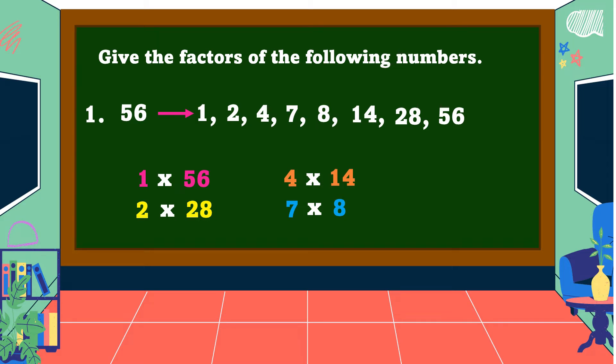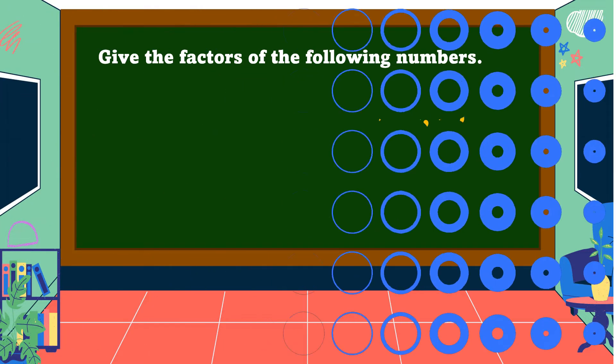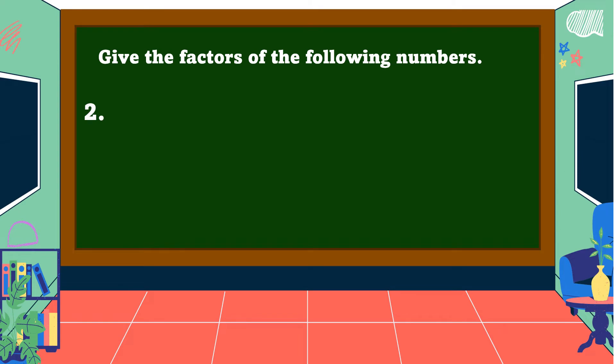All right, the factors of 56 are 1, 2, 4, 7, 8, 14, 28, and 56.